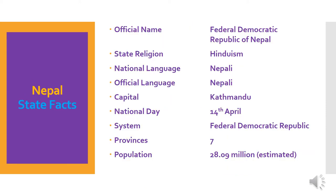Here are some facts about Nepal. Official name: Federal Democratic Republic of Nepal. State religion: Hinduism. National language: Nepali. Official language: Nepali. Capital: Kathmandu. National day: 14th April. System: Federal Democratic Republic. Provinces: 7. Population: 28.09 million, estimated.